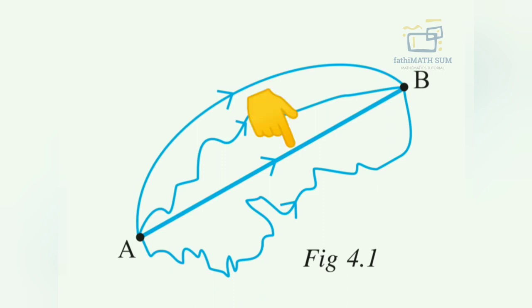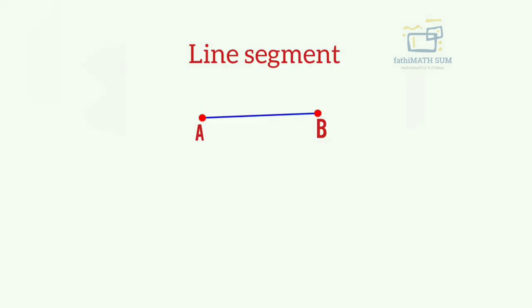including A and B shown here is a line segment. It is denoted by line segment AB or line segment BA. Here the endpoints A and B are called the endpoints of the segment. We can conclude that a line segment corresponds to the shortest distance between two points.